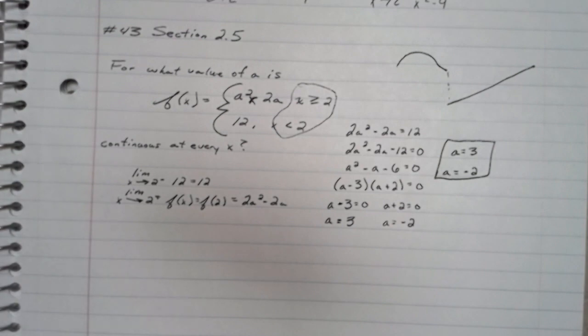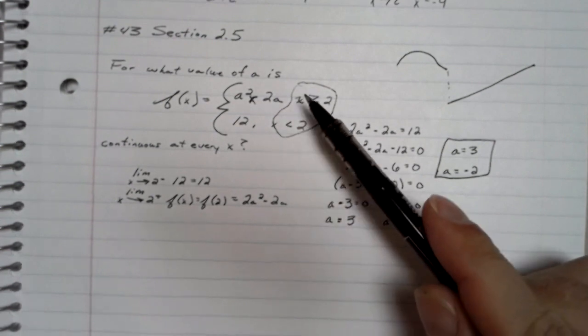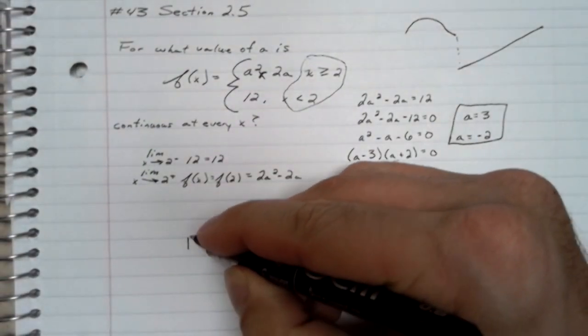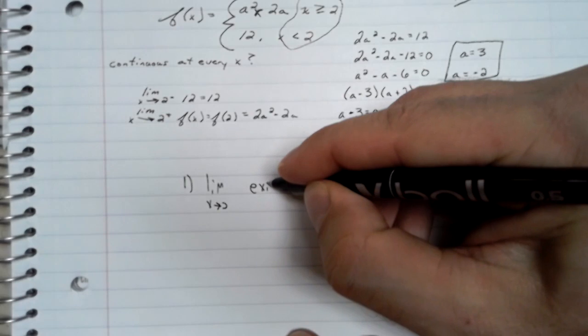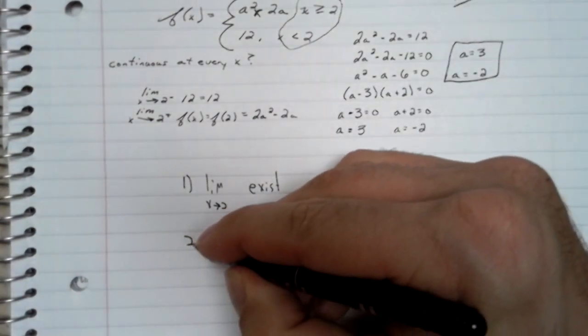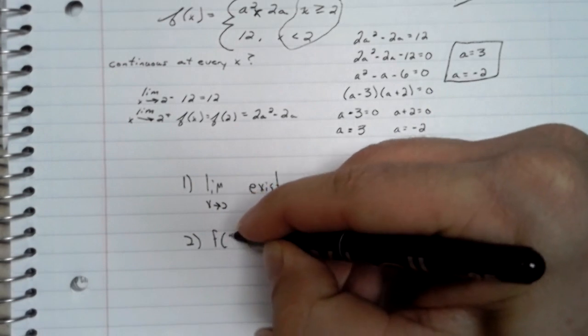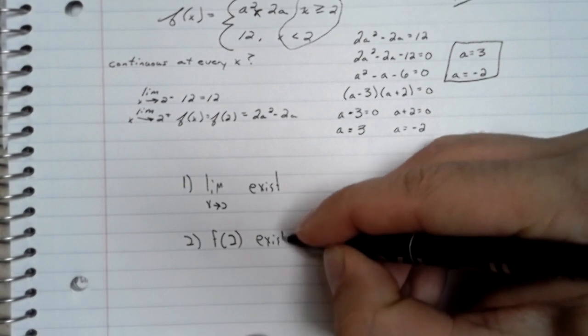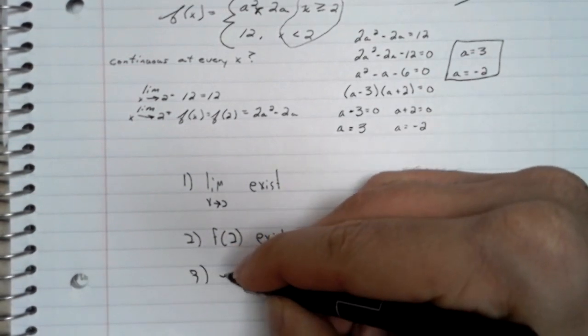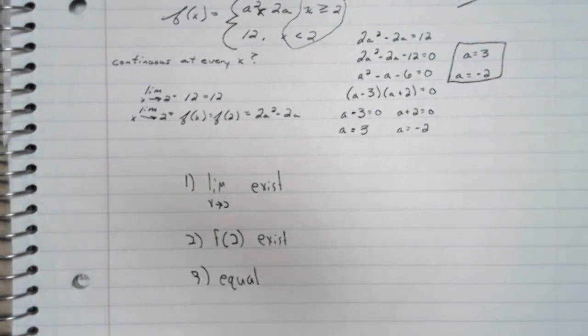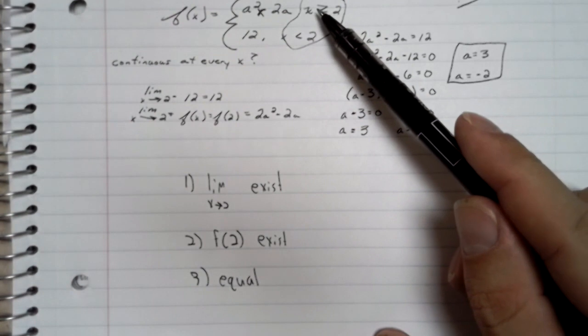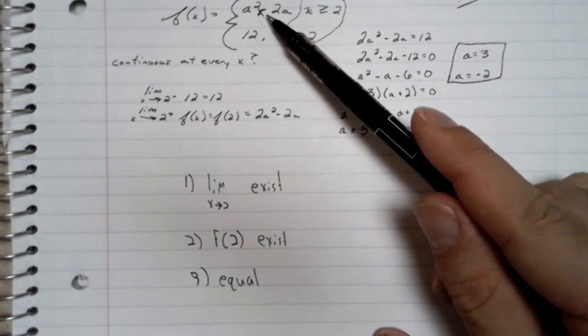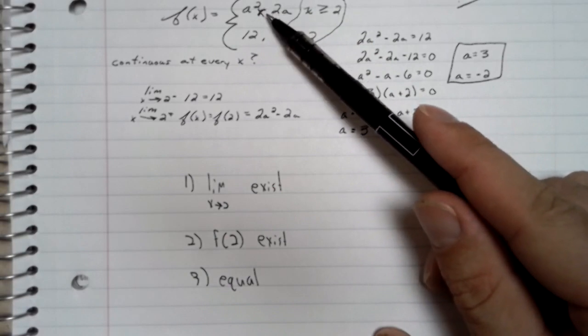If I can just expand slightly on the argument being made here. For f to be continuous at 2, we need three things. We need the limit as x approaches 2 to exist. We need f of 2 to exist. And we need the limit and f of 2 to be equal. So f of 2 exists when x is greater than or equal to 2, and f of 2 is 2a squared minus 2a.